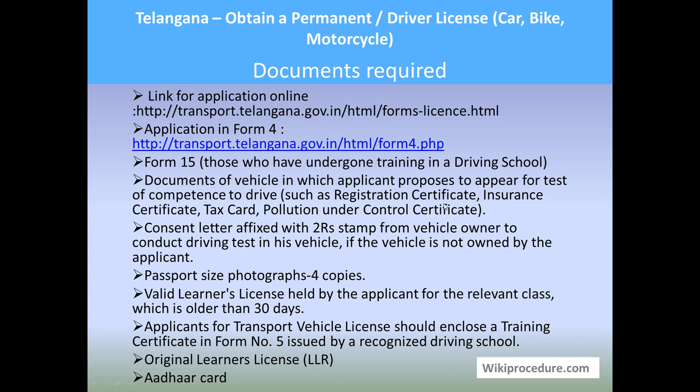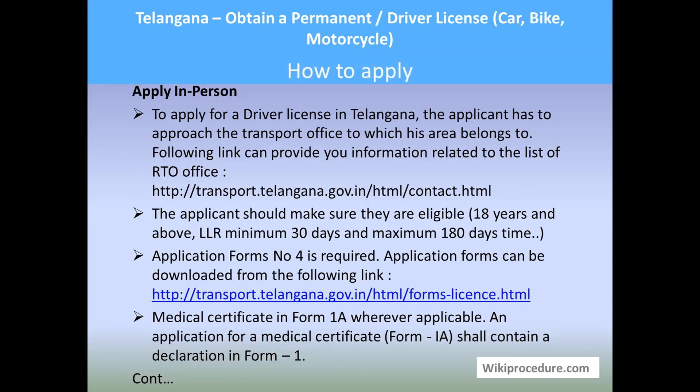Form 15 is required for those who have undergone training in a driving school. Documents of the vehicle in which the applicant proposes to appear for the test of competence to drive are also needed — these include RC book, insurance paper, tax card, and pollution under control certificate. If the vehicle doesn't belong to the applicant, a consent letter from the owner with a two-rupee stamp is required. Also needed: passport-size photographs (four copies), and a valid learner's license with validity of more than 30 days and less than 180 days. Applicants for transport vehicle license should enclose a training certificate in Form 5 issued by a recognized driving school.